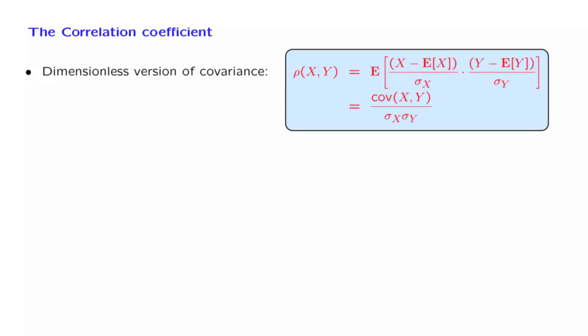A much more informative quantity is the so-called correlation coefficient, which is a dimensionless version of the covariance. It is defined by this formula here: we just take the covariance and divide it by the product of the standard deviations of the two random variables.